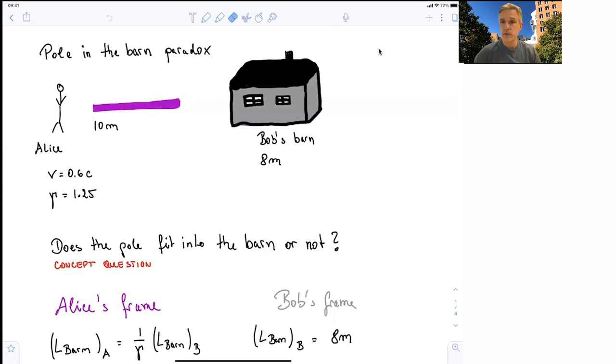We have Alice. She has a pole. The pole is 10 meters long in her reference frame. And Bob is very proud of his New England barn, which is, in his reference frame, 8 meters long. Alice, however, is moving with a velocity of 0.6 times the speed of light, which gives us a gamma factor of 1.25. Does the pole fit into the barn or not? I'll stop here and think about this for a second, and we will continue with an analysis.